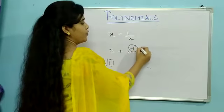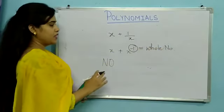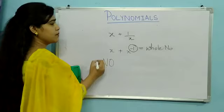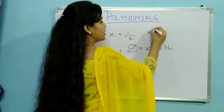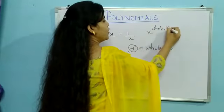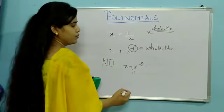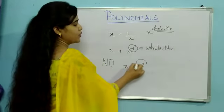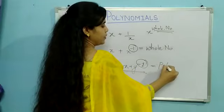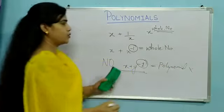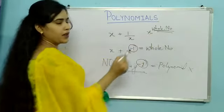It is not a polynomial because the power here is not a whole number. For something to be a polynomial, one condition must always be satisfied: the power of any variable must always be a whole number. If it is not a whole number — for example, x plus y to the power minus 2, minus 1 — anything in a negative or non-whole-number form means that term will not be called a polynomial.